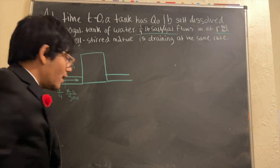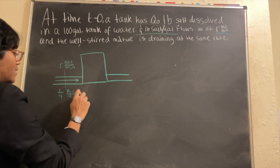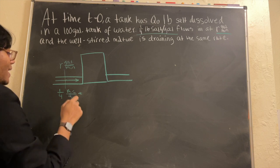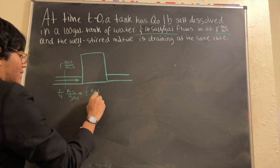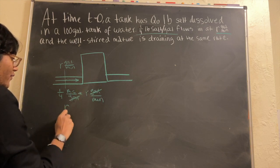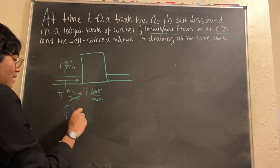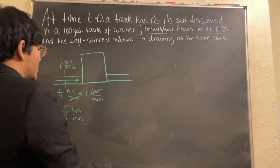And so now, if I want to find the total, all I have to do is multiply these two. Multiply one-fourth pounds per gallon by r gallons per minute. And that's going to give me, gallons cancel out. I'm left with r over four pounds per minute of salt entering my system.